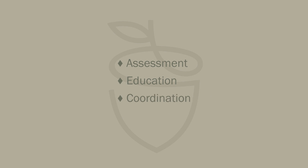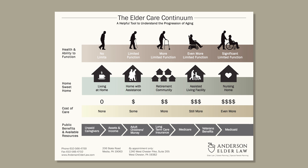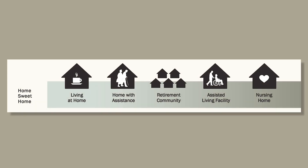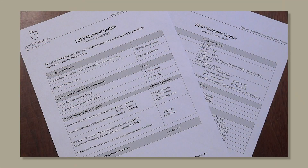We do that through four different components: assessment, education, coordination, and advocacy. In terms of assessment, we conduct an initial assessment and ongoing assessments in order to determine the client's level of care on the continuum of care. The continuum of care is a tool we utilize to determine and assess where the client is in terms of their level of independence — looking at health and ability to function, whether they're independent, need home care services, are in a personal care or assisted living community, or in a nursing home setting. The tool also looks at cost and available resources to fund that type of care, as well as the public benefits available to the client.